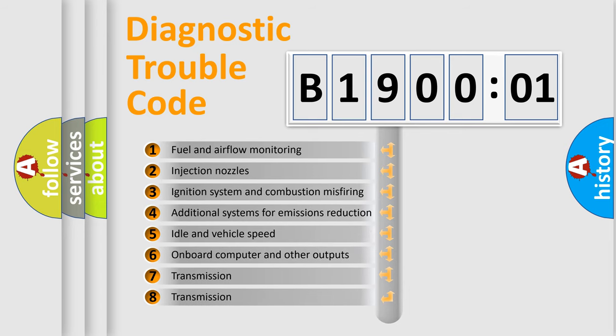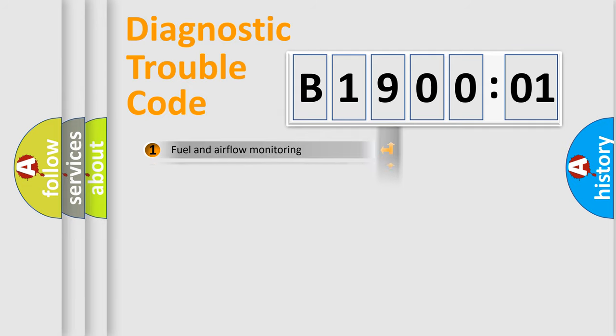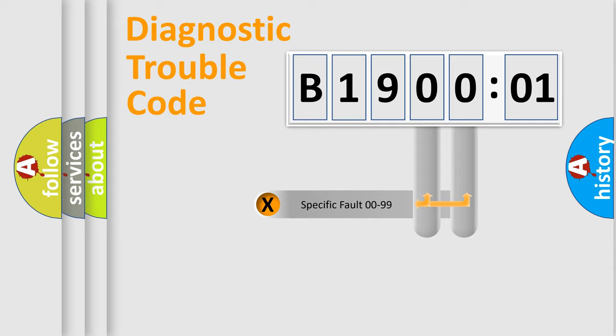The third character specifies a subset of errors. The distribution shown is valid only for the standardized DTC code. Only the last two characters define the specific fault of the group.